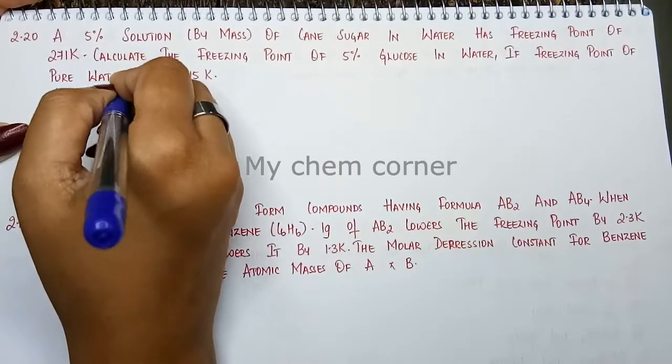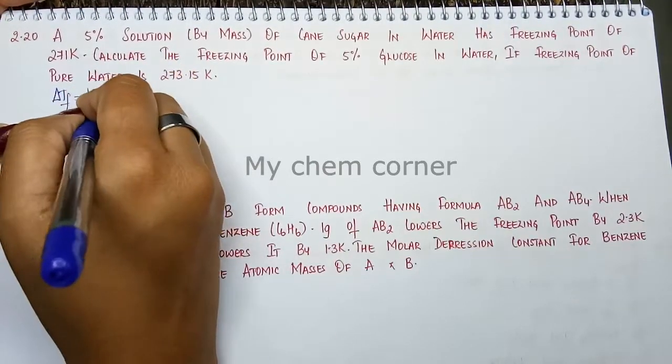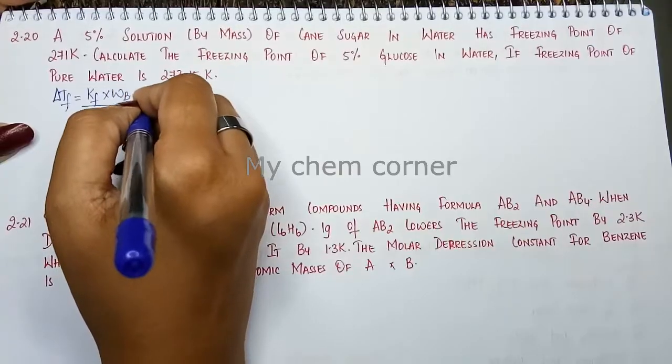Delta Tf is equal to Kf into Wb divided by Wa into M into 1000.